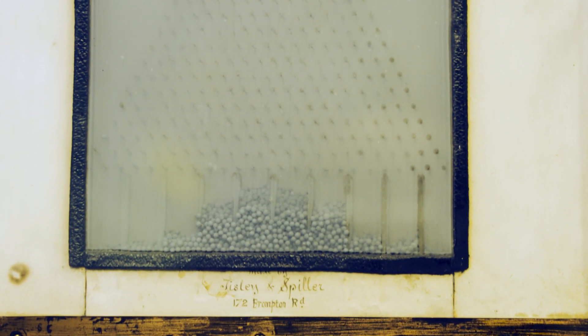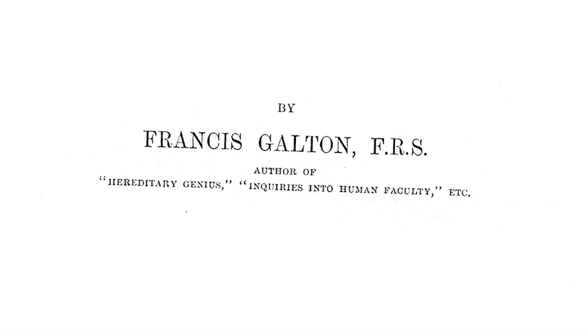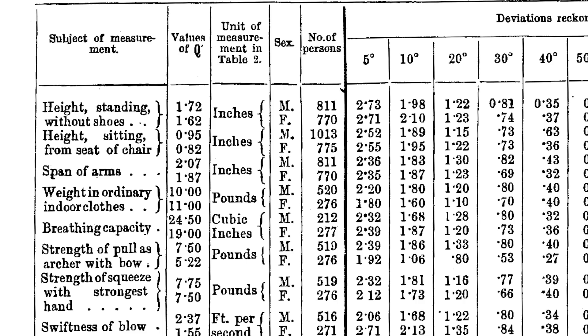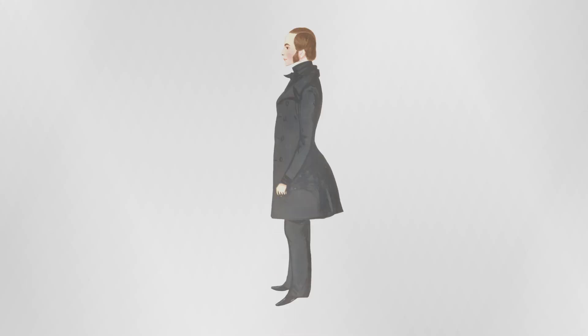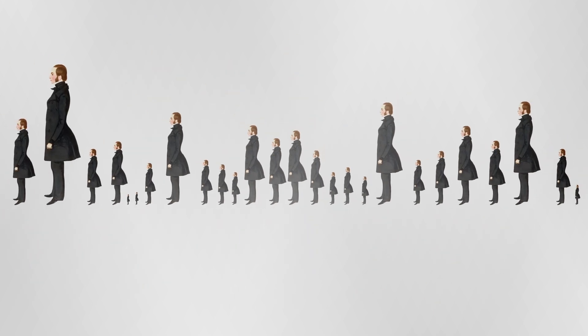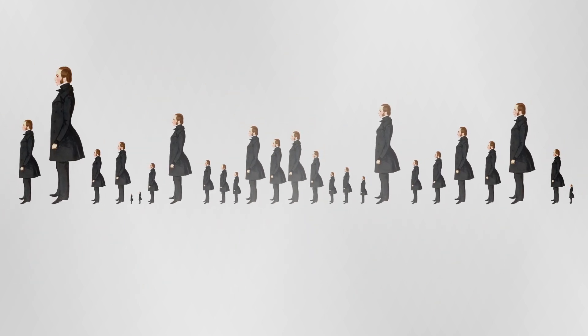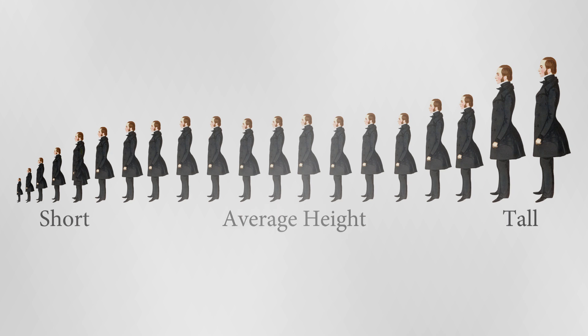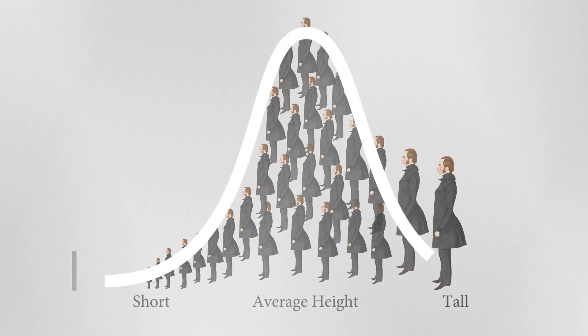He was very interested in biology and medicine and the application of mathematics to it. He was particularly interested in how certain characteristics are inherited — that interest in passing on genes, as it were, was actually how he came to be interested in statistics. He was particularly curious about why certain human characteristics, such as height, instead of randomly varying within a population, appeared to vary in a very orderly, recognisable way, and specifically according to something called a normal distribution.